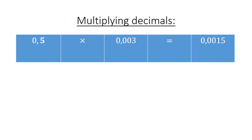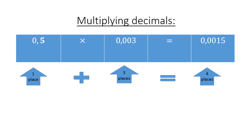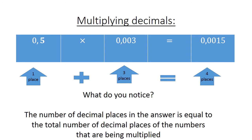Multiplying decimals. Now we are going to have a look at all the place values. 0.5, there is one place value after the 0. Plus 0.03, we see three place values, and the answer equals 0.015. We see four places there. So it will be four places. What do you notice? The number of decimal places in the answer is equal to the total number of decimal places of the numbers that are being multiplied.